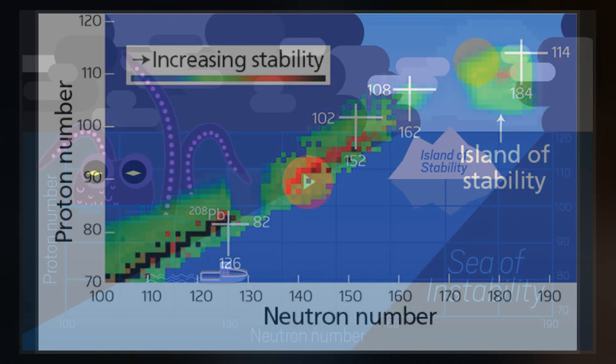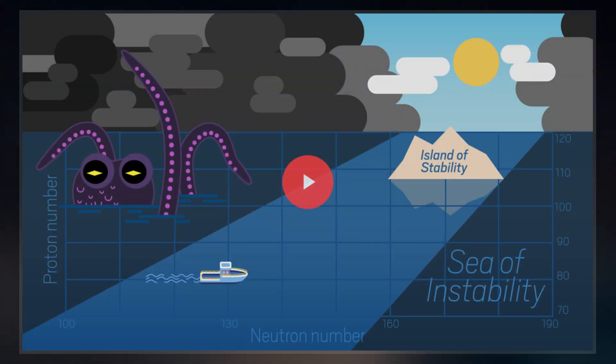It is predicted to appear as an island in the chart of nuclides, separated from known stable and long-lived primordial radionuclides.